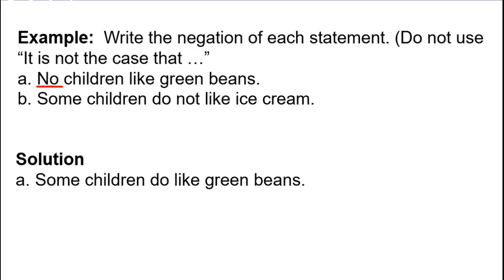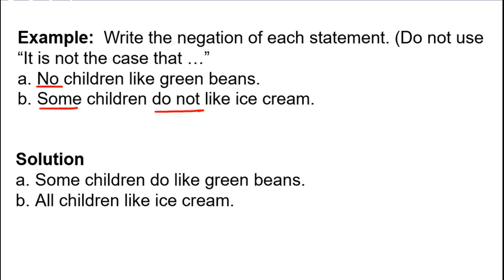Part B: Some children do not like ice cream. That is an existential quantifier, so we negate it using a universal one. When we say there's somebody who does not like ice cream, the opposite — what would make that false — is if everybody does. So 'all children like ice cream' is the negation.